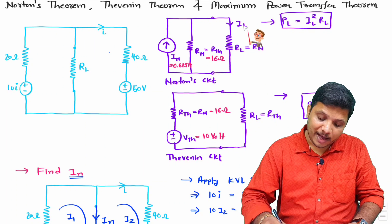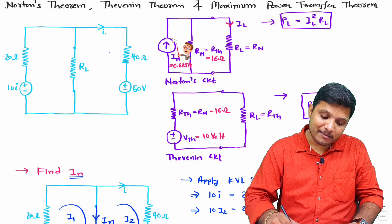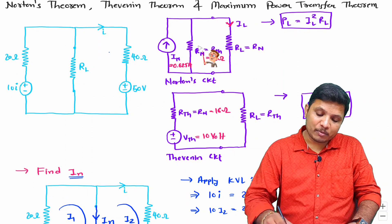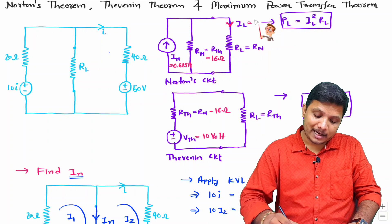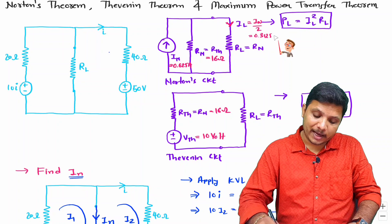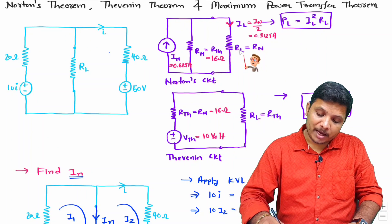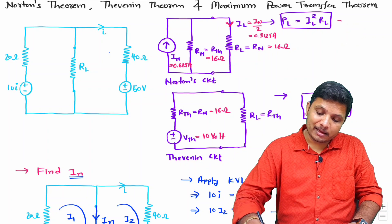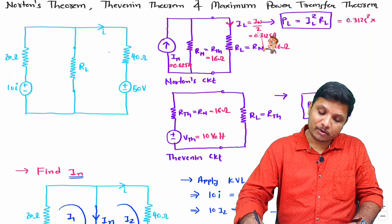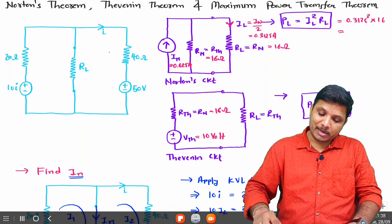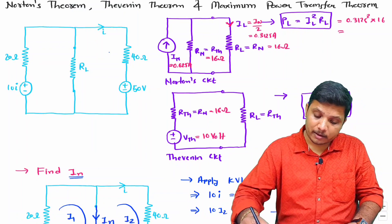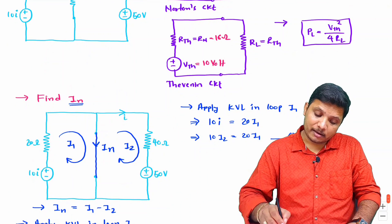Let's find I_L first. In Norton's circuit, the current I_n divides equally between R_n and R_L since both resistances are equal when R_L equals 16 Ω. So I_L equals I_n divided by 2, which is 0.625 divided by 2 equals 0.3125 A. Maximum power P_L equals I_L squared times R_L equals 0.3125 squared times 16, giving P_L equals 1.5625 watts.